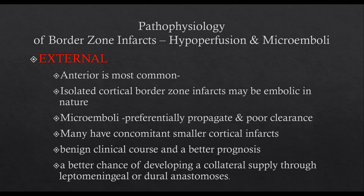What has changed in the pathophysiology of border zone infarcts? Previously, it was thought to be only due to hypoperfusion from stenosis or occlusion. But now, a new concept of microemboli has emerged. These microemboli — either from the heart or from arteries — preferentially propagate and get lodged in the watershed areas. Since these areas have poor perfusion, they have poor clearance, and this produces infarcts. Since this is an embolic event, there are usually concomitant smaller cortical infarcts. Since these infarcts are closer to the cortex, there is a high chance of developing collateral supply through leptomeningeal or dural anastomosis.